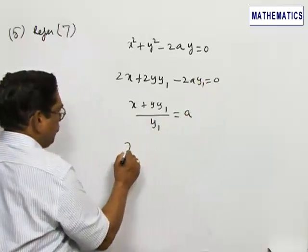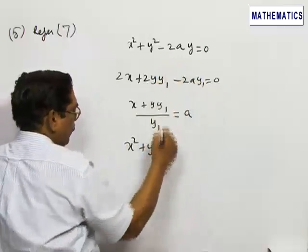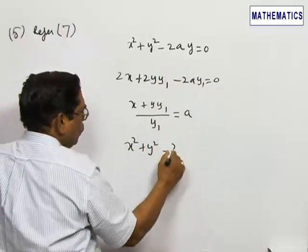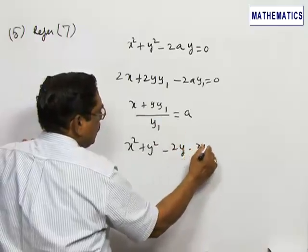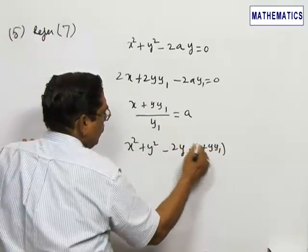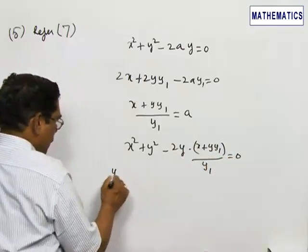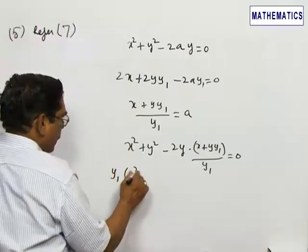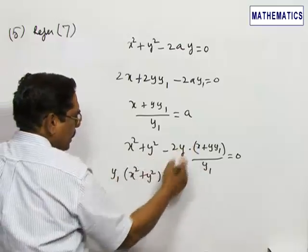So x squared plus y squared, I substitute the value of a here. Minus 2y, in the place of a I will be having x plus yy1 divided by y1 equal to 0. Which means y1 into x squared plus y squared, I cross multiply this.